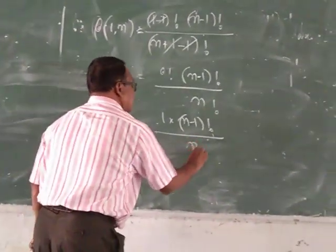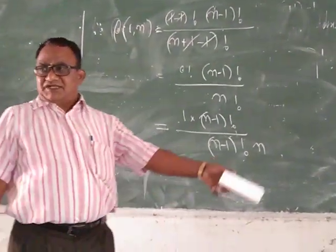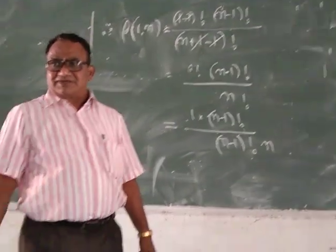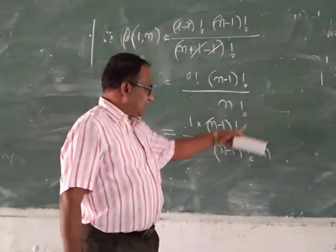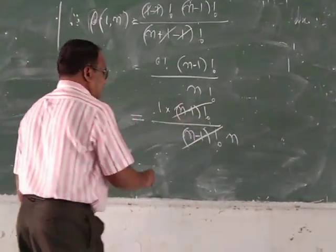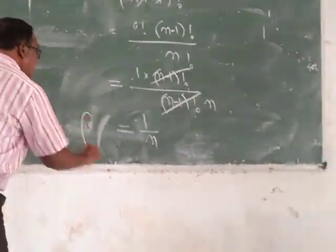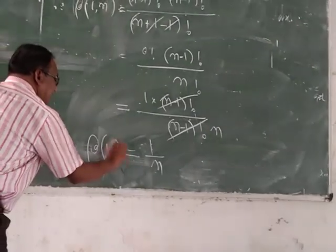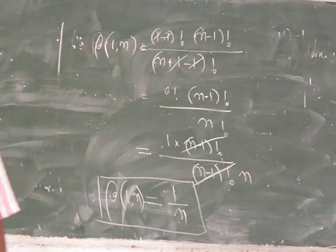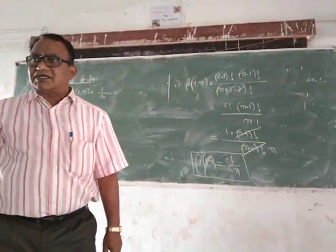Now n! may be written as n · (n-1)!. So we have (n-1)! divided by n · (n-1)!. The (n-1)! cancels, leaving us with 1/n. Therefore we have proved that β(1,n) = 1/n. With this, let's go to the examples in the next class.